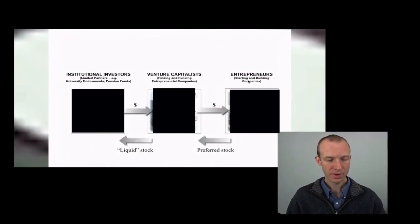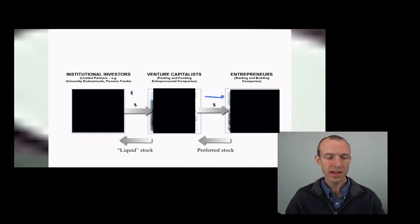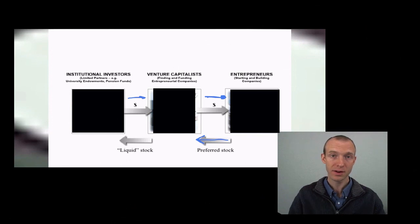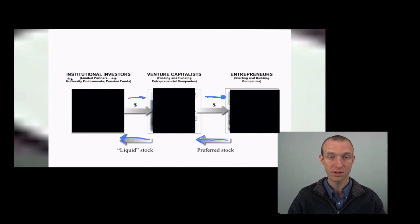Let's talk in a bit more detail about venture capital and how it works. Venture capitalists essentially give money to entrepreneurs to start their businesses. They in turn get their money from institutional investors — university endowments or pension funds. In exchange for giving money to entrepreneurs, the venture capitalists receive what's called preferred stock, which is equity ownership in the company. Then, perhaps five to ten years later, after an acquisition or an initial public offering on the stock market, these venture capitalists will return more liquid stock to the institutional investors.